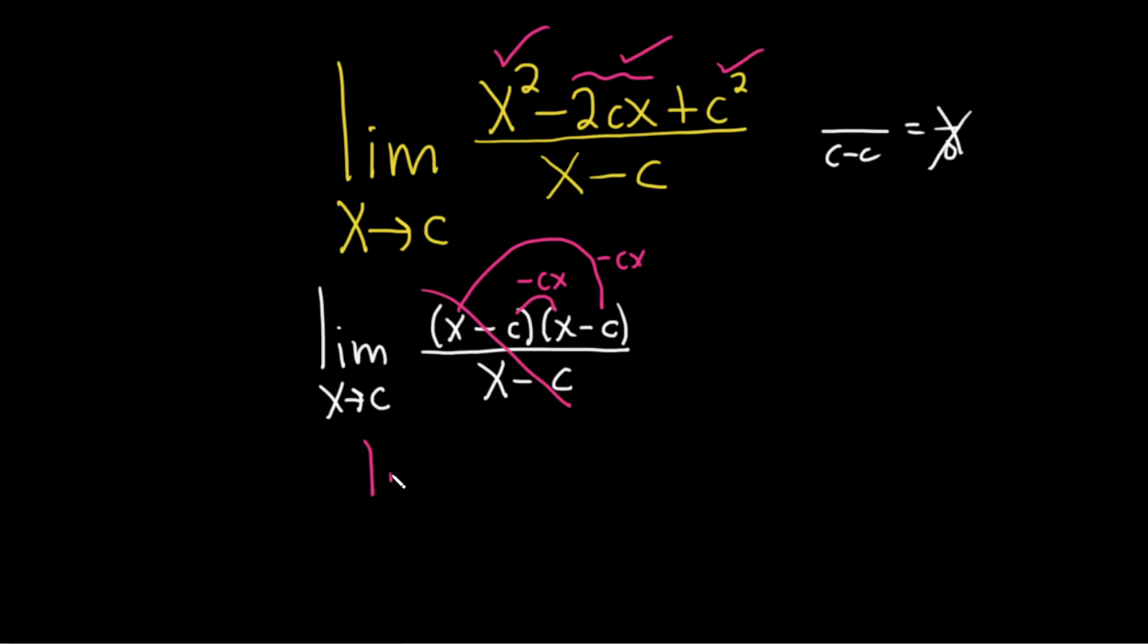This cancels. So we have the limit as x approaches c, and we're just left with x minus c.